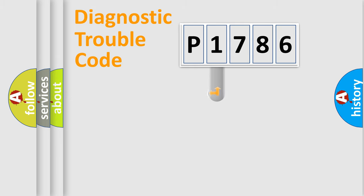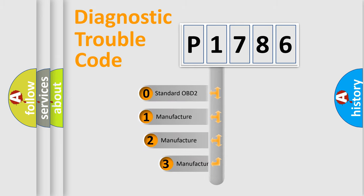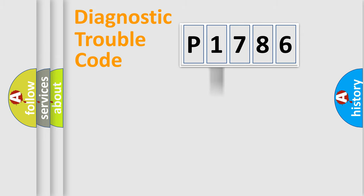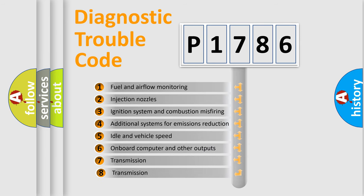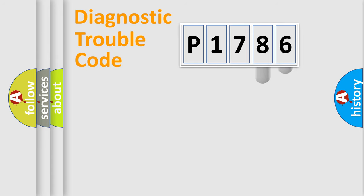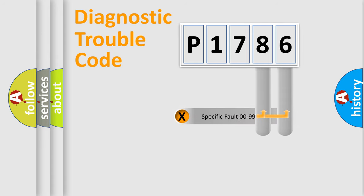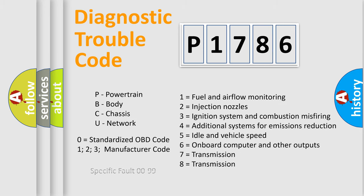This distribution is defined in the first character code. If the second character is expressed as zero, it is a standardized error. In the case of numbers 1, 2, 3, it is a more specific expression of the car-specific error. The third character specifies a subset of errors. The distribution shown is valid only for the standardized DTC code. Only the last two characters define the specific fault of the group. Let's not forget that such a division is valid only if the second character code is expressed by the number zero.